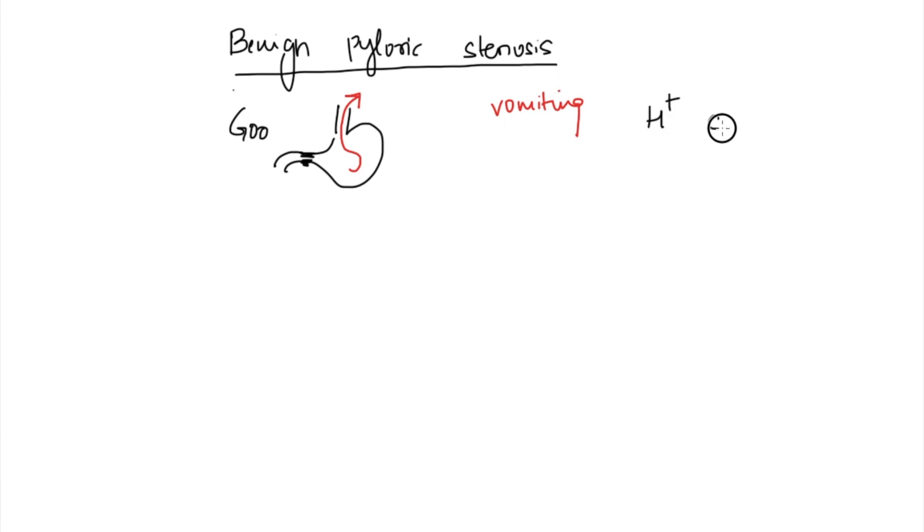Because of excessive vomiting, you lose H+ and Cl-. The stomach has acid, so the acid is thrown out when you vomit. You lose H+ and Cl-, so let's write our first electrolyte abnormality: hypochloremia. This is pretty simple to understand.